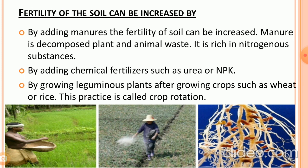The fertility of the soil can be increased by three ways: first, by adding manures, which are decomposed plant and animal waste; second, by adding chemical fertilizers such as urea or NPK; and third, by growing leguminous plants after crops such as wheat or rice. This practice is called crop rotation, which you will learn about in higher classes.